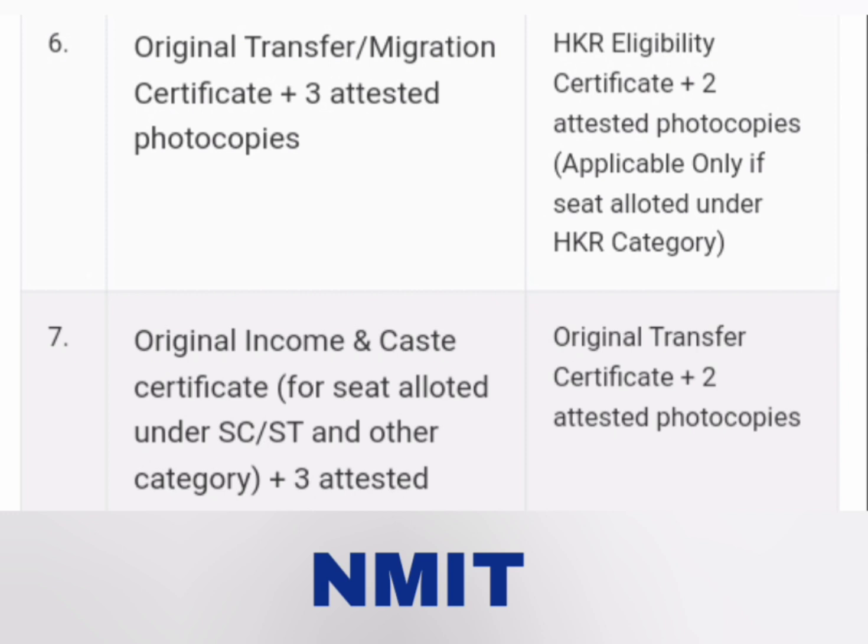The seventh document for KCET students is all caste certificates — original income certificate, caste certificate, and seat allotment under SC/ST and other categories, plus three attested copies. For COMED-K students, they need to bring the original transfer certificate plus two attested copies. This is for Niti Meenakshi and will be similar for all other colleges.